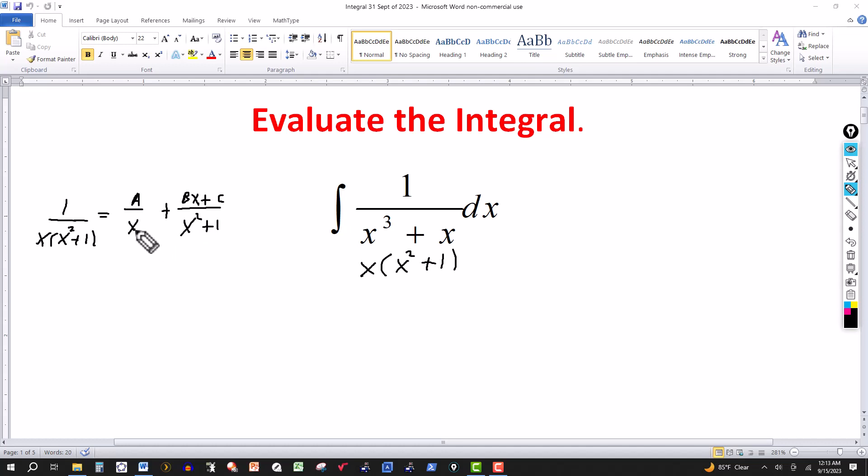Let's clear the fractions by multiplying through by the LCD, which is x times x squared plus 1. That'll leave me a 1 on the left side. When I multiply by the LCD, the x will cancel in the first fraction on the right, giving me A times x squared plus 1. And on the second fraction, the x squared plus 1 will cancel, leaving me with Bx plus C times x.